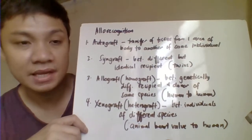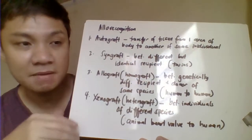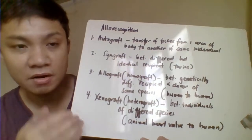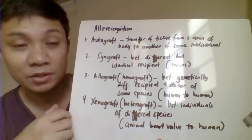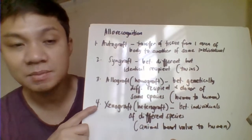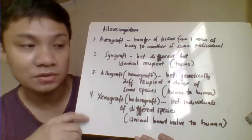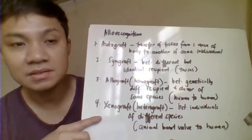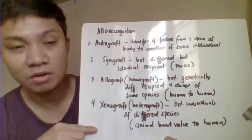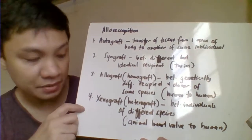The second type is the syngraft or syngeneic transplantation, which is transplantation between two different but genetically identical individuals of the same species — such as between identical twins. The third is the allograft or homograft, which is transplantation between individuals of the same species, such as human to human. The fourth is the xenograft, which is transplantation between individuals of different species, such as animal tissues transplanted into a human.